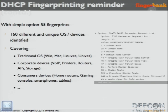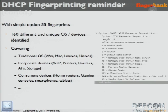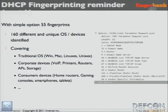With option 55 only — no other parameters — we have a database of 160 different OSes and devices. It's all blurry together nowadays, OS, device, and stuff like that. This includes a lot of stuff: Fluke devices, switches — and when I saw that, I was asking myself, who the hell runs DHCP on switches? You know, it shouldn't be — all should be fixed IPs — but anyway, we got them.